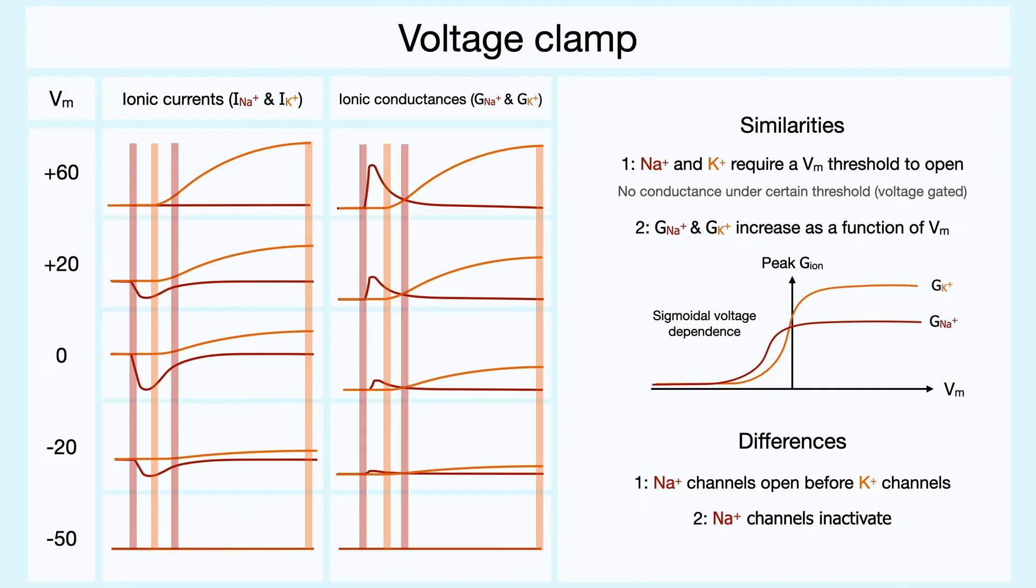To understand why voltage-gated potassium and sodium channels have different voltage and time dependencies, we need to consider the individual structure of the channels and how they function by themselves. For the moment, the currents that we have considered are currents that correspond to the summed input of thousands of channels.